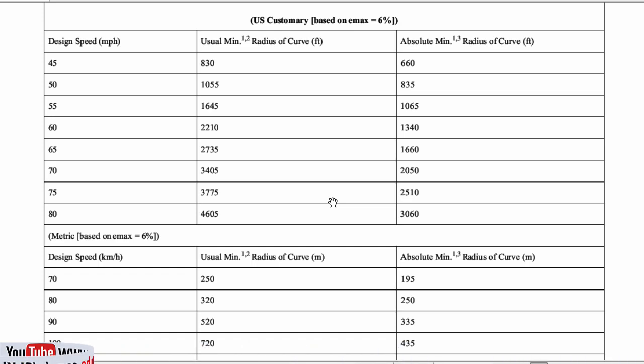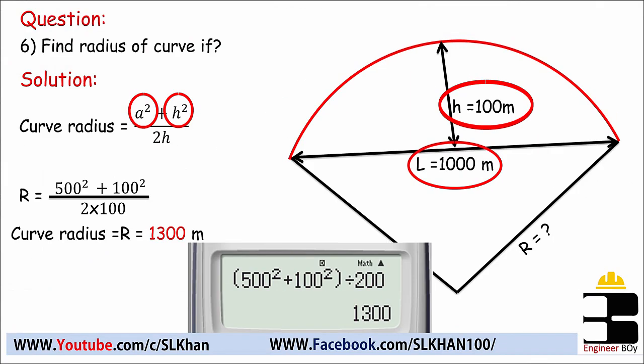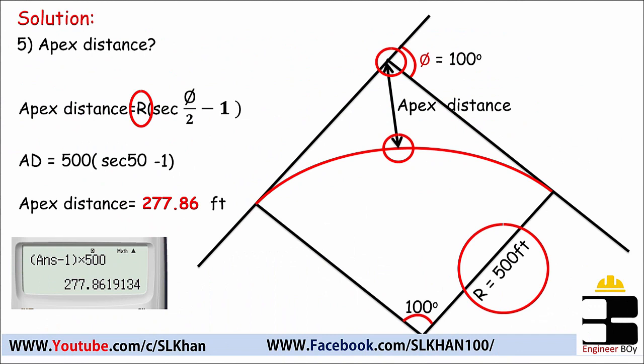If you know the chord and mid-ordinate of the curve, you can use this formula: R = (a² + h²) / (2h), where 'a' is the half-chord and 'h' is the mid-ordinate. This gives you the curve radius directly.